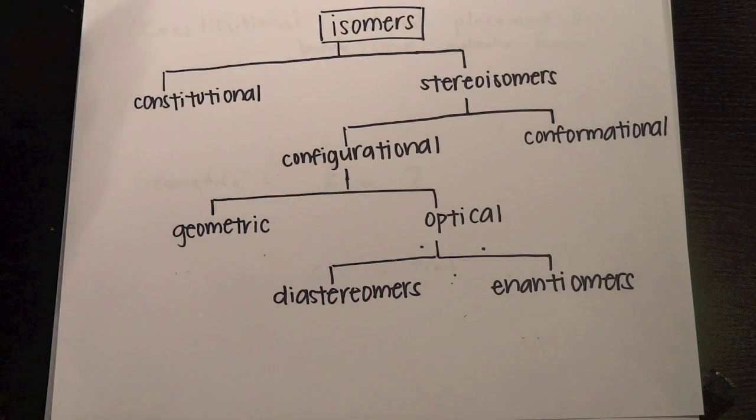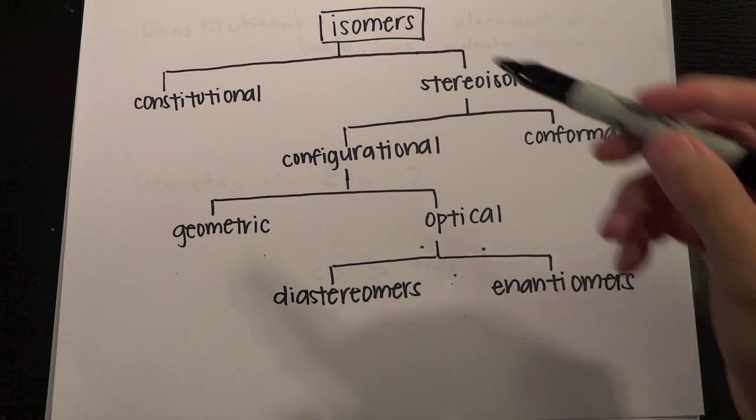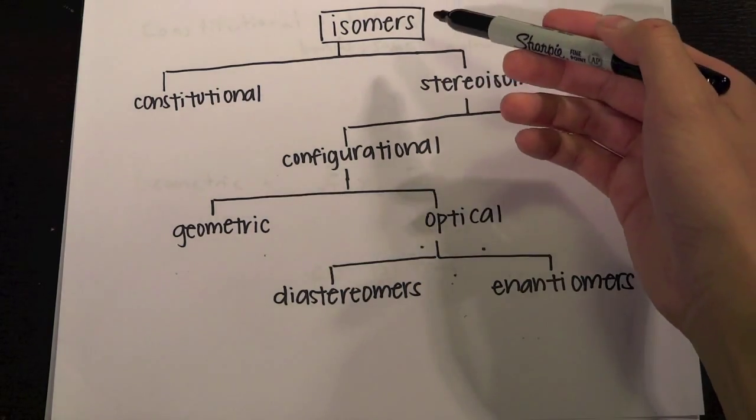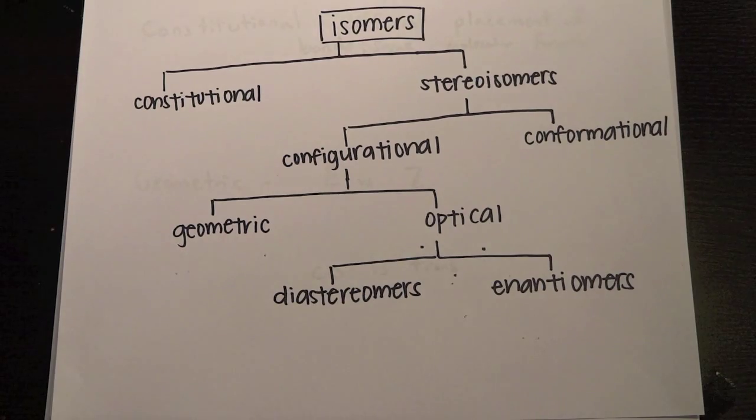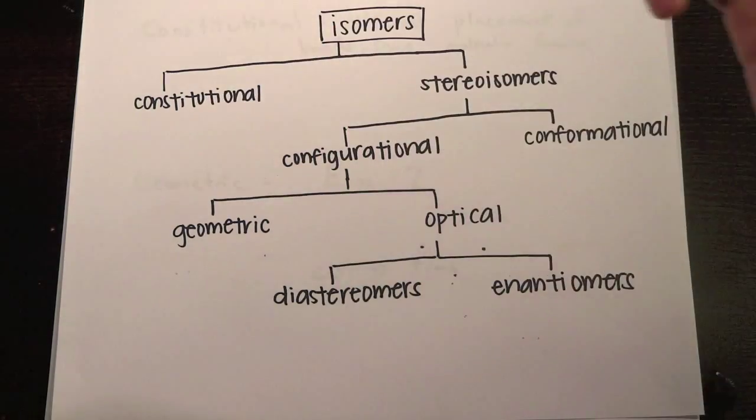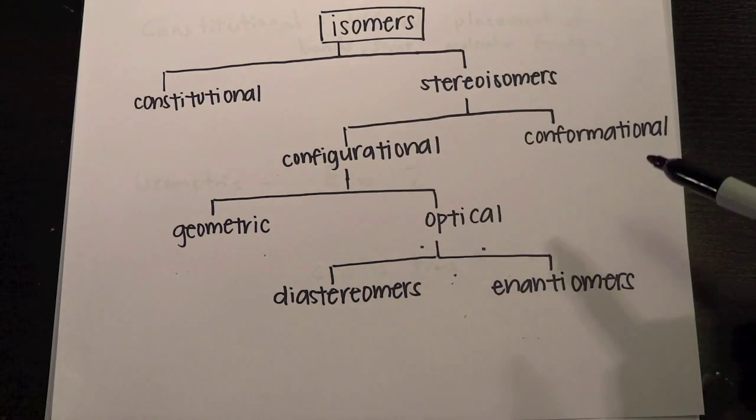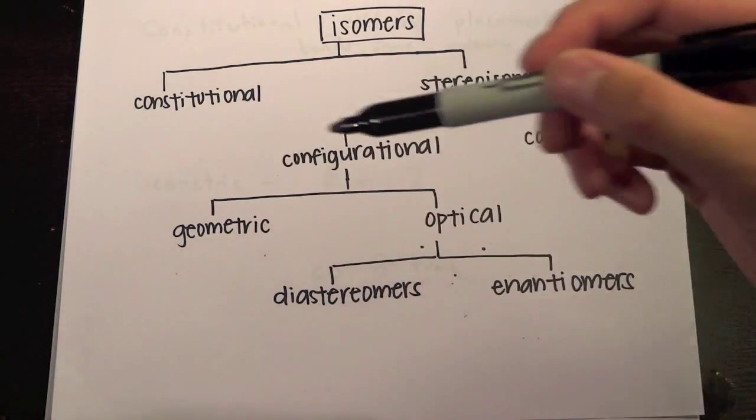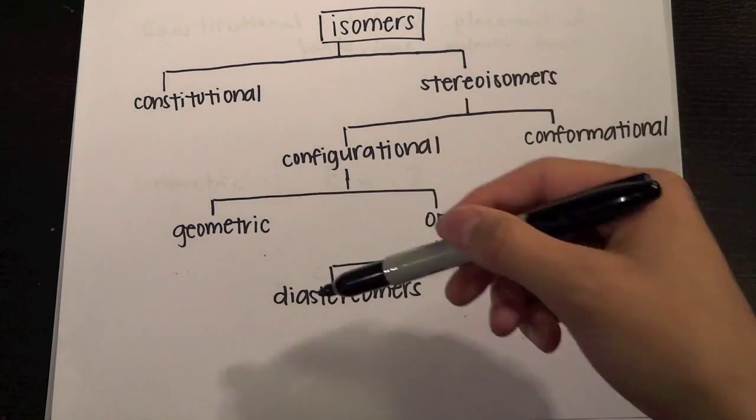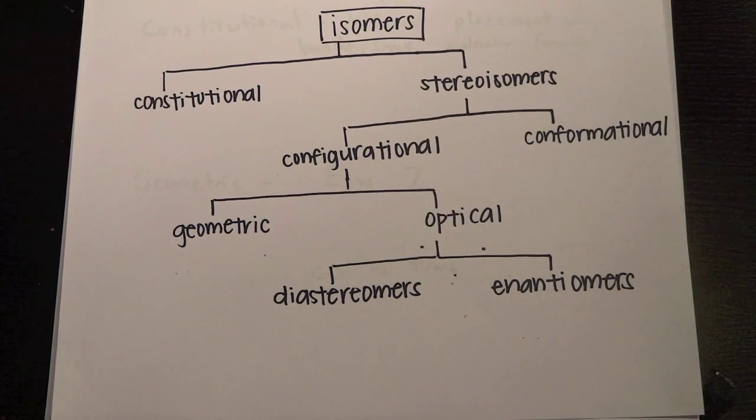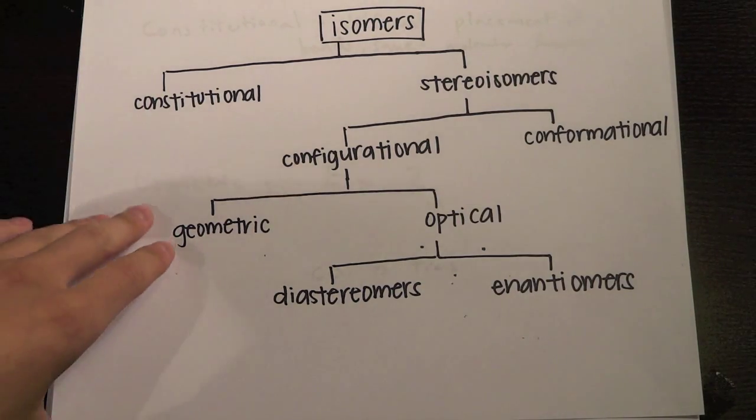But none of these were actually E versus Z, none of them said that, so we have to go through every single type of isomer and kind of decide which one's which. So this is just a general isomer, can be broken down into many different parts. They can be broken down into constitutional and stereoisomers, and stereoisomers can go into configurational and conformational. Configurational can go into geometric and optical, and optical can go into diastereomers and enantiomers. It's not being kind of confusing, but we'll go through every single one.